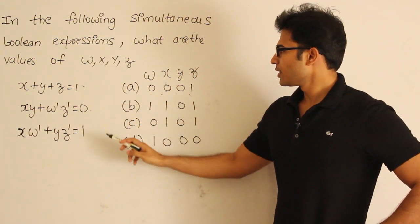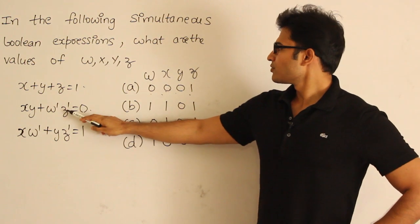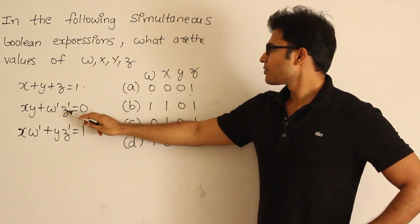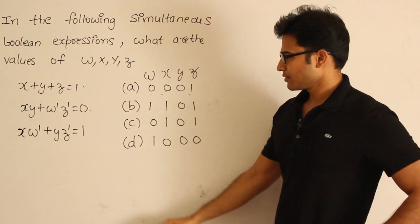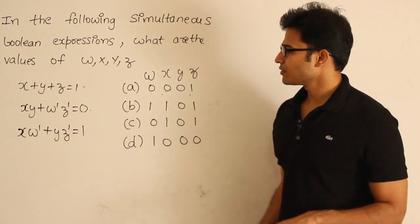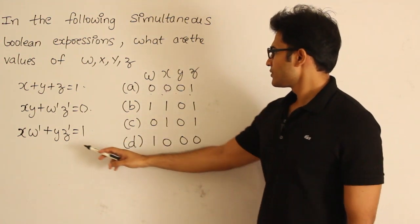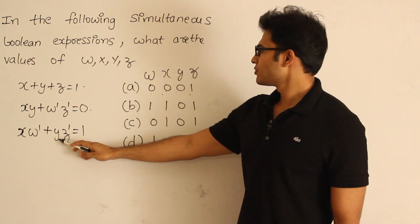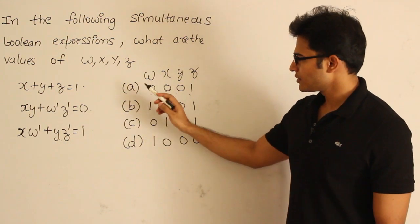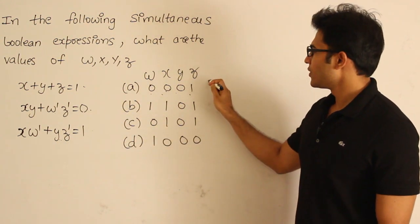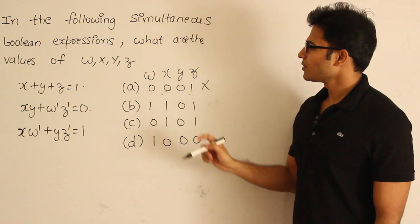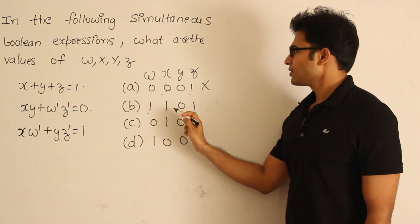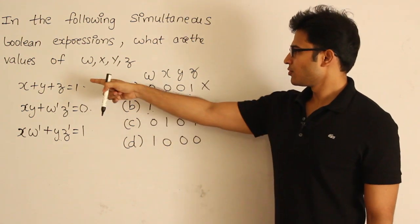Now let's check the second equation: x·y is 0 and w' is 1, and z' is 0 — it is also verifying. But for the last one, x·w' is 0 and y·(this) is 0, so the last equation is failing. Therefore this candidate cannot be the answer.